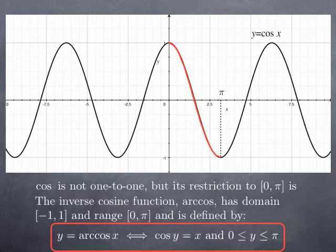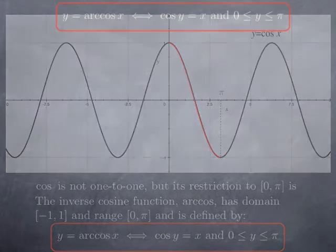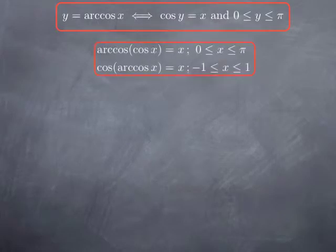Because this is the inverse function of the restriction of cosine to the closed interval [0, π], y equals arccos(x) if and only if cosine of y is x and y is between zero and pi. In other words, arccos(x) is the angle between zero and pi whose cosine is x. Because arccos and cosine — at least the restriction to [0, π] — are inverses of each other, arccos(cos(x)) equals x as long as x is between zero and pi. If it's not, we have to adjust. And cos(arccos(x)) equals x for any x in the domain of arccos, which is [−1, 1], because that is the range of cosine.